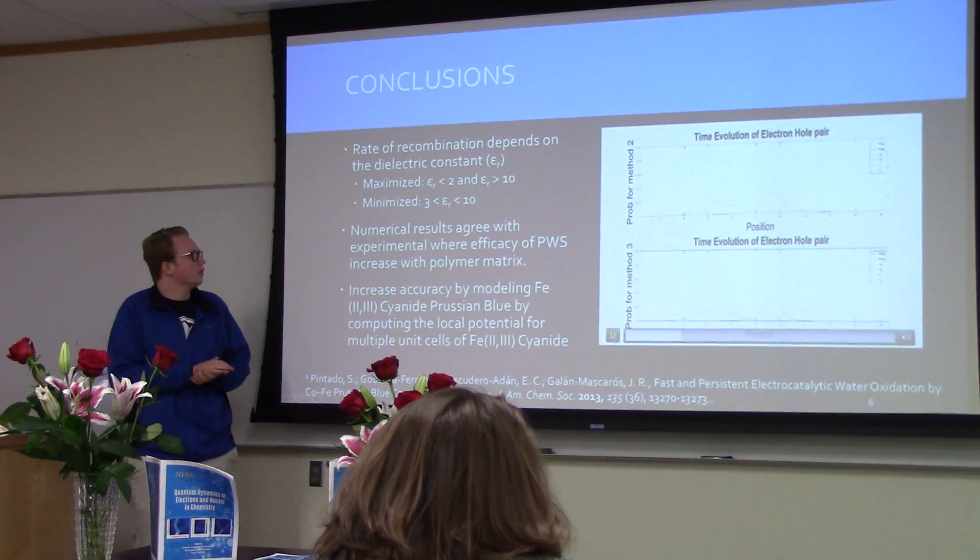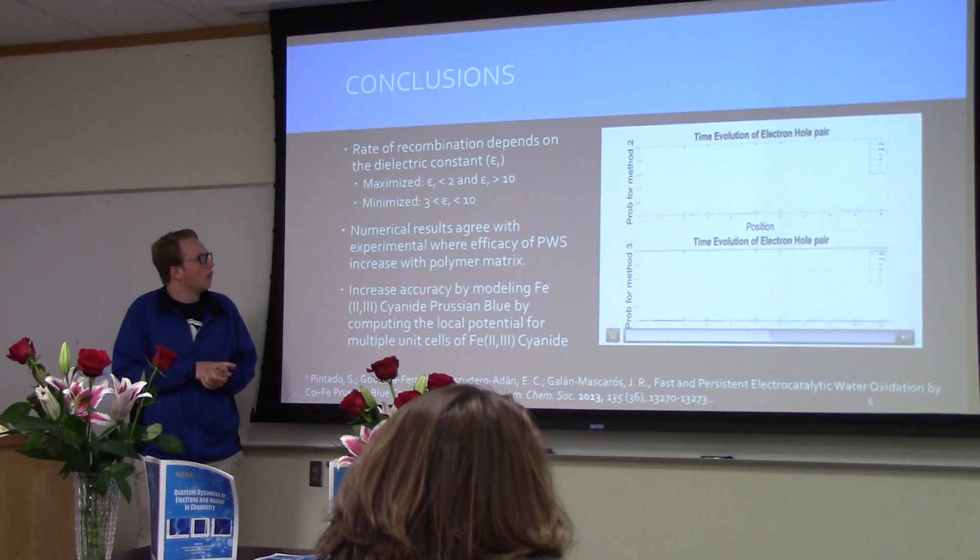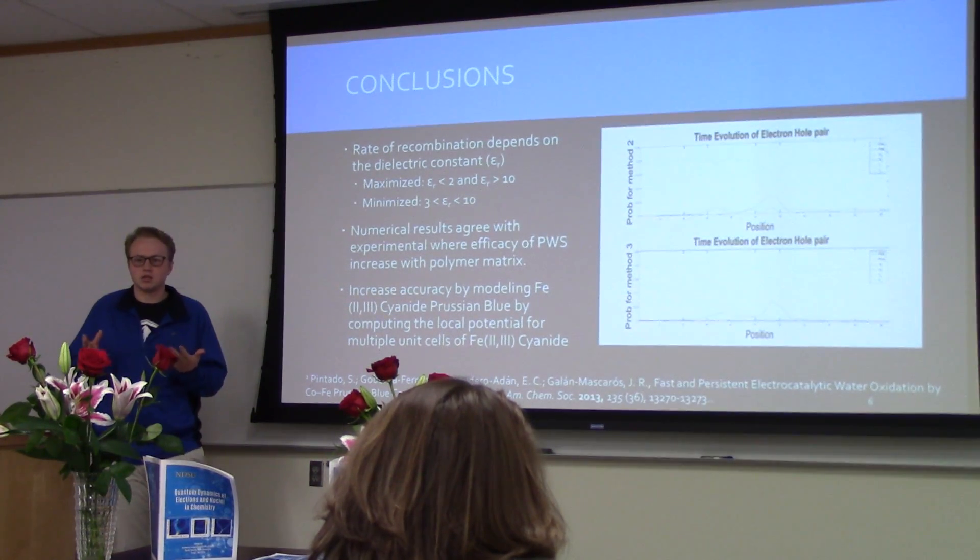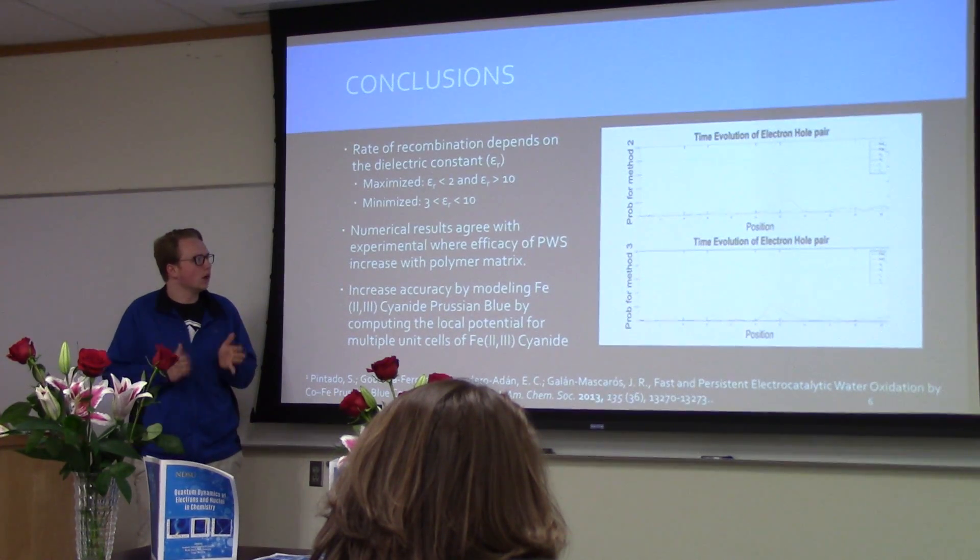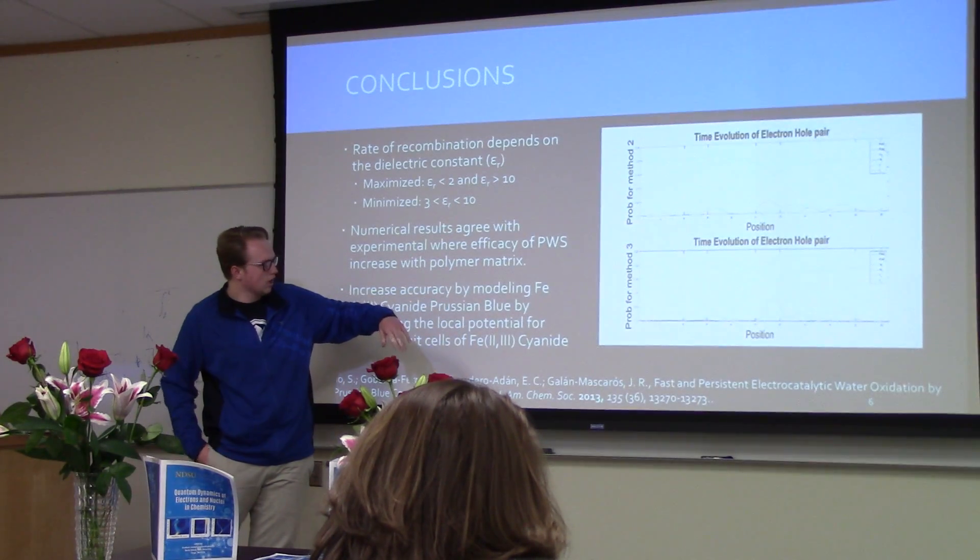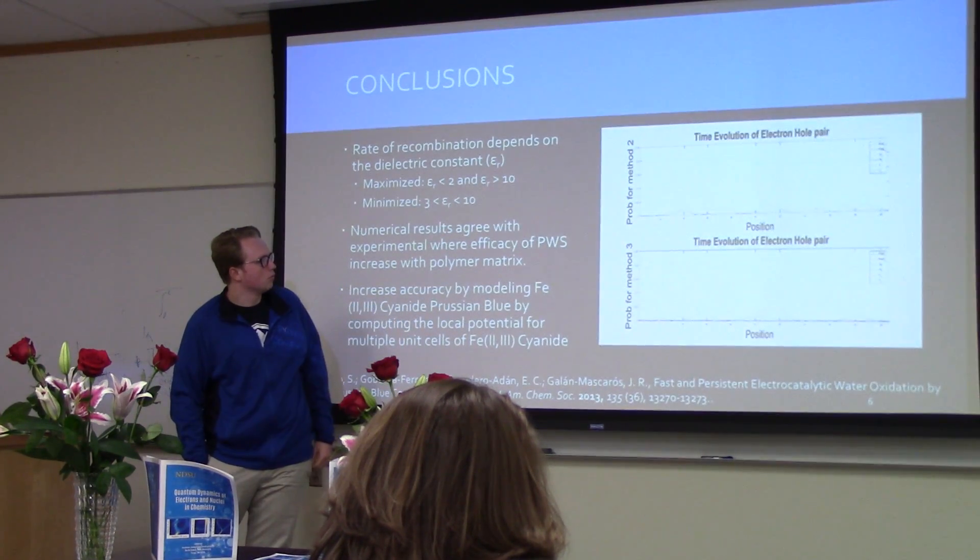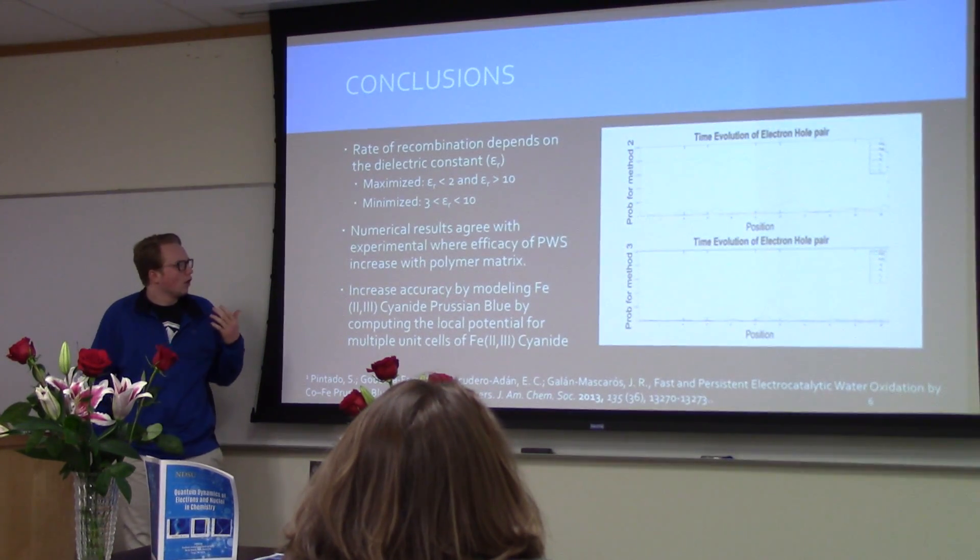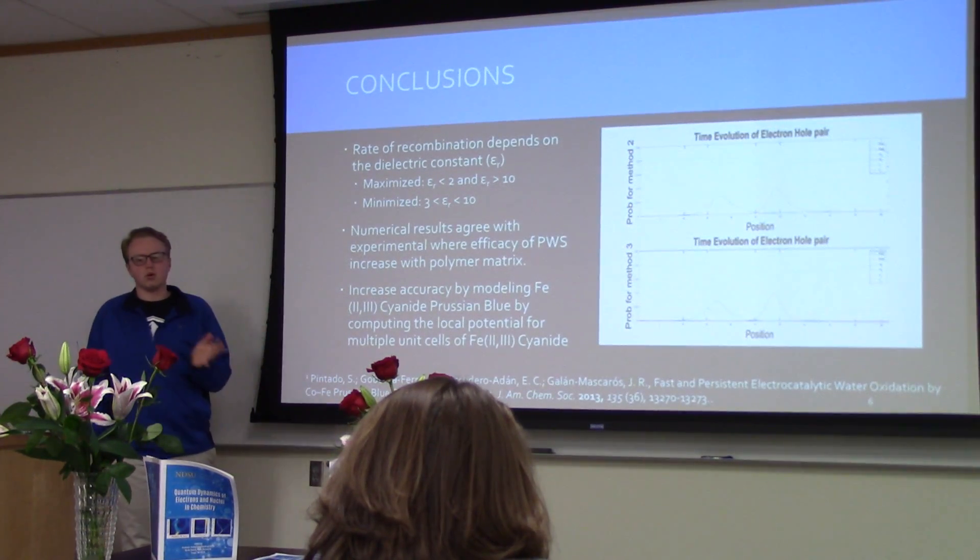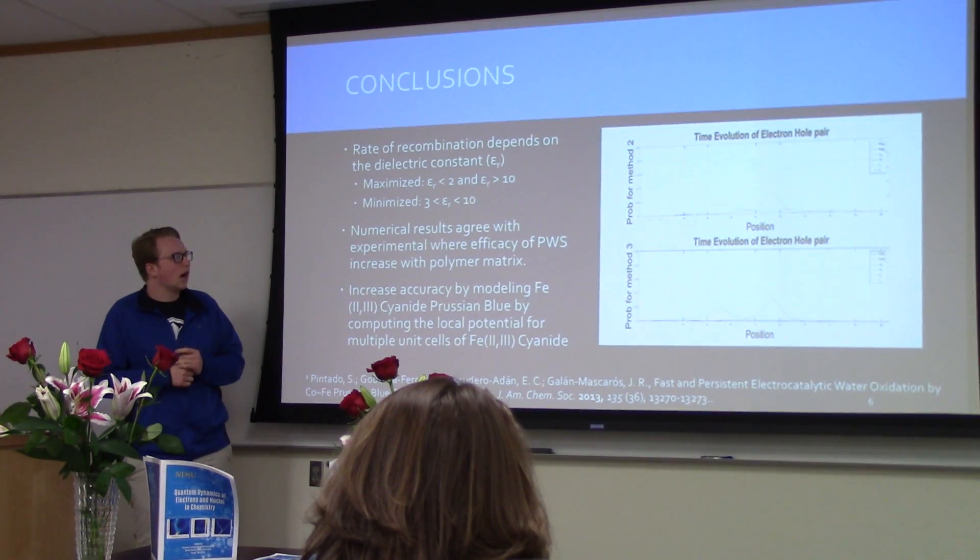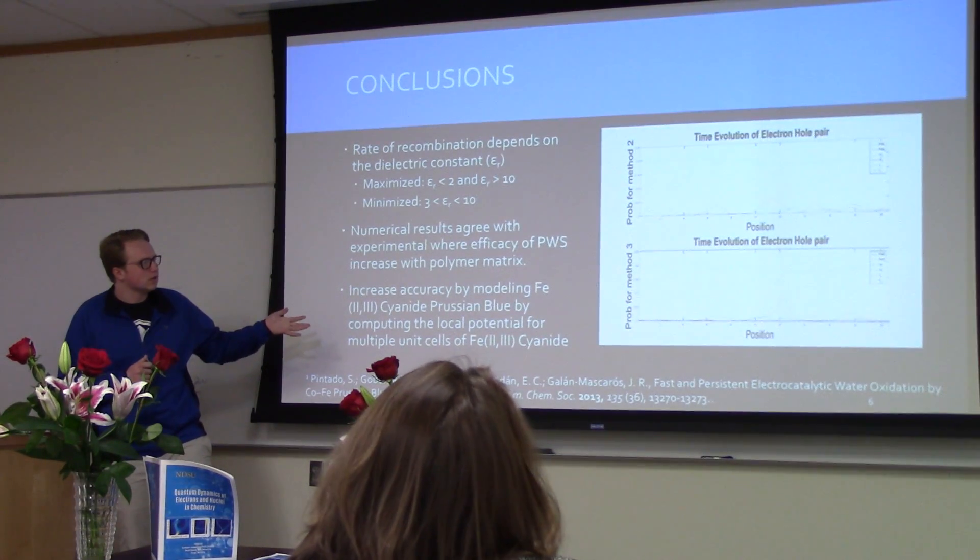In conclusion, we see that when we vary the dielectric constant, if it's very high or above 10, the rate of recombination is higher than when it's lower. Our conclusions also support the paper where they say that a polymer matrix increases the efficiency of the cell.